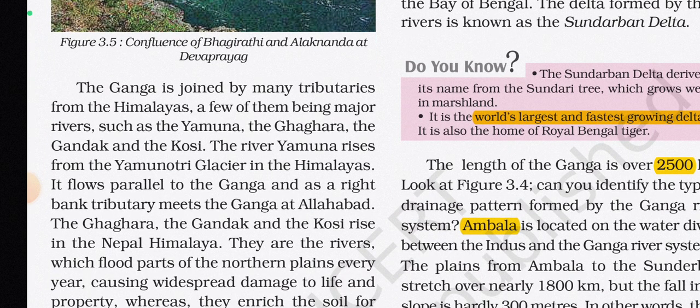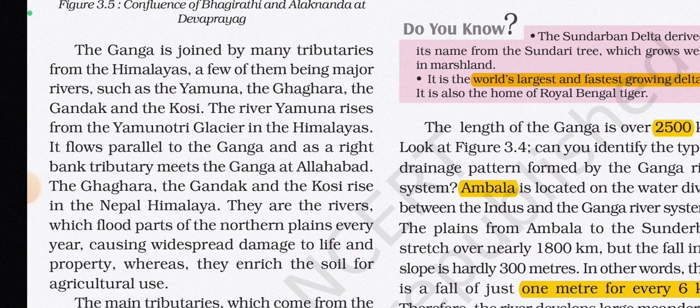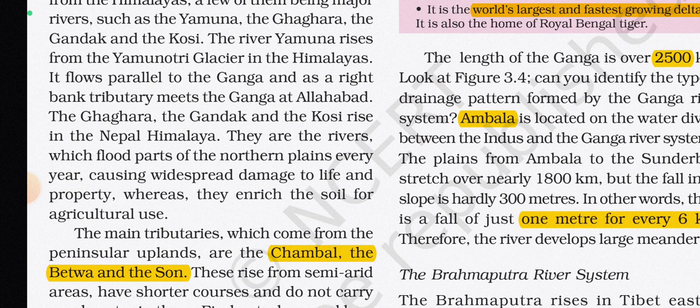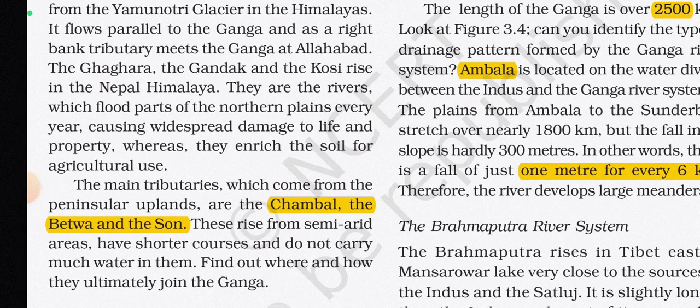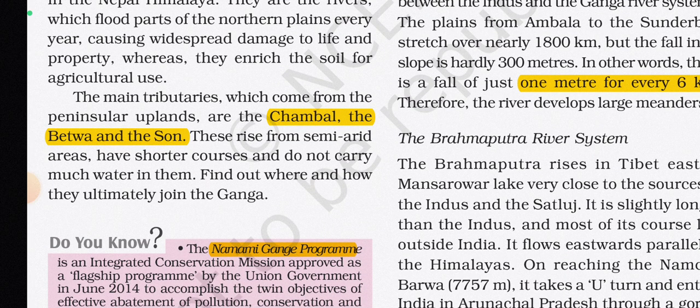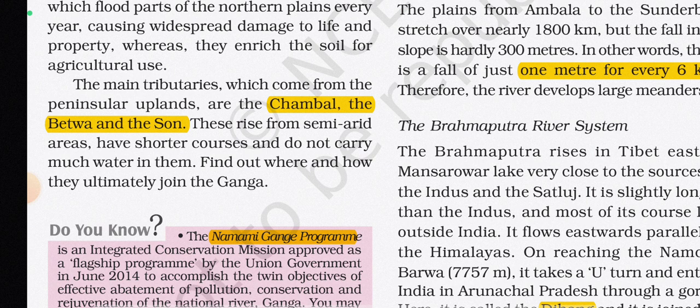The Alaknanda is joined by major tributaries including the Yamuna, the Ghaghra, the Gandak, and the Kosi. The Yamuna rises from the Yamunotri Glacier and flows parallel to the Ganga, meeting it at Allahabad as a right bank tributary. The Ghaghra, Gandak, and Kosi rise in the Nepal Himalaya and flood parts of the northern plains every year. From the Peninsular uplands come the Chambal, Betwa, and Son.